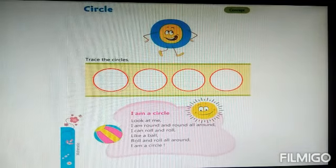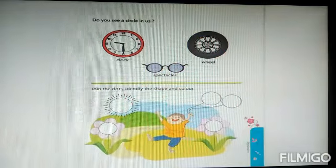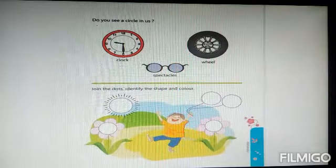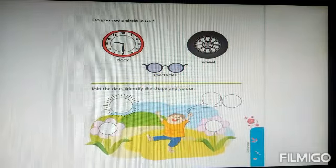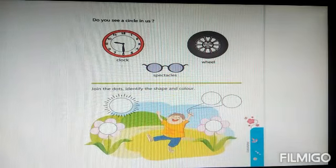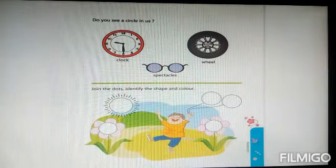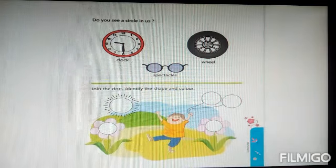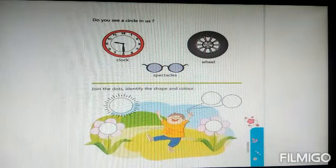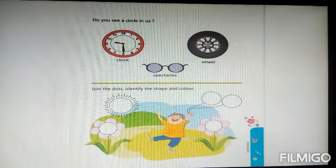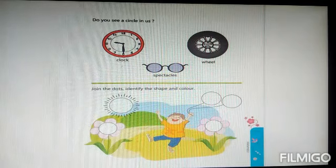Kids, now let us do another activity. See, what is here? It is a clock. Do you see a circle in this? Yes. The shape of clock is circle. Now, what is here? Wheel. The shape of wheel is circle. Good.